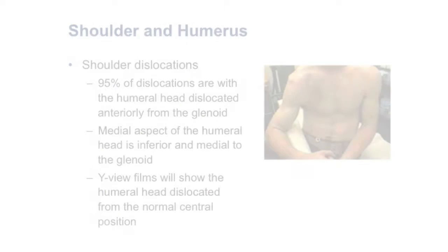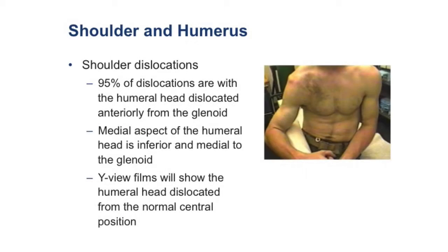Dislocations are quite common in the athletic population. Ninety-five percent of those are anterior and inferior. So if you had to make a bet about which way this person dislocated, if you were to guess anterior and inferior, you'd probably be right.